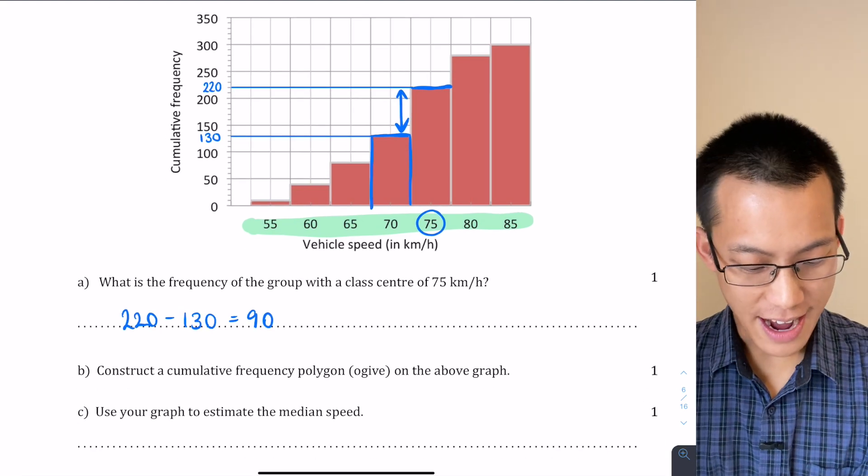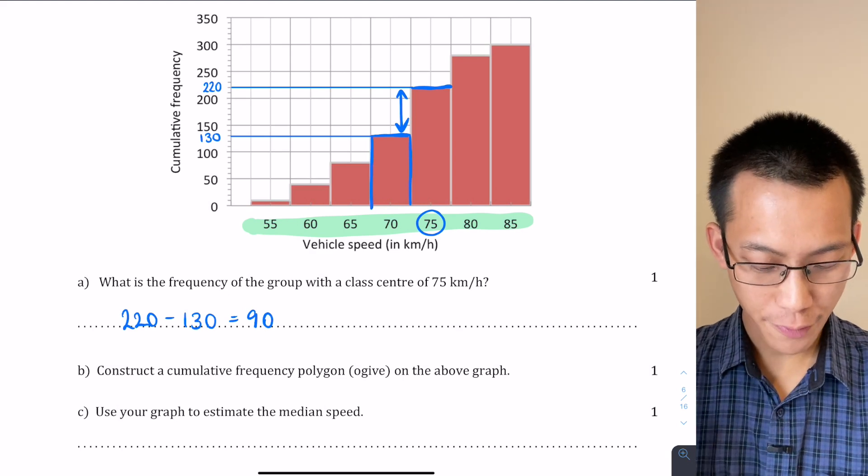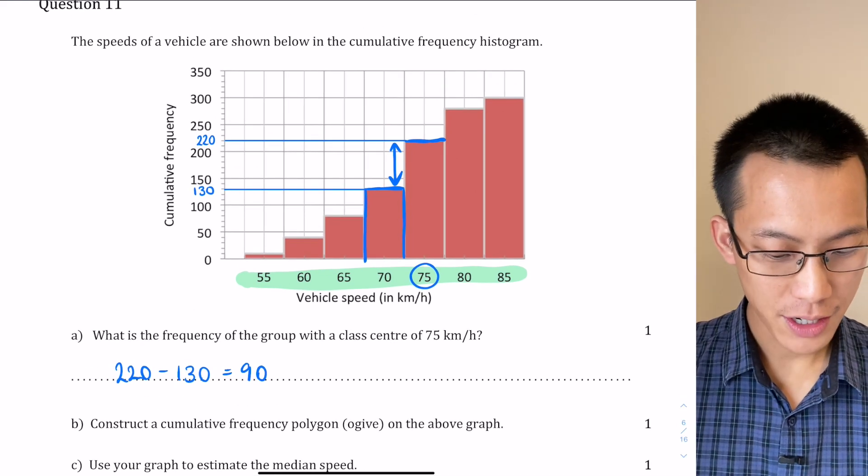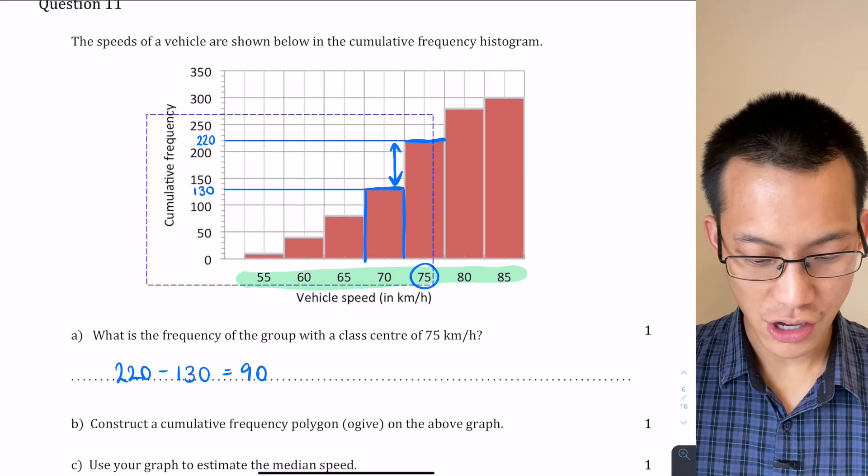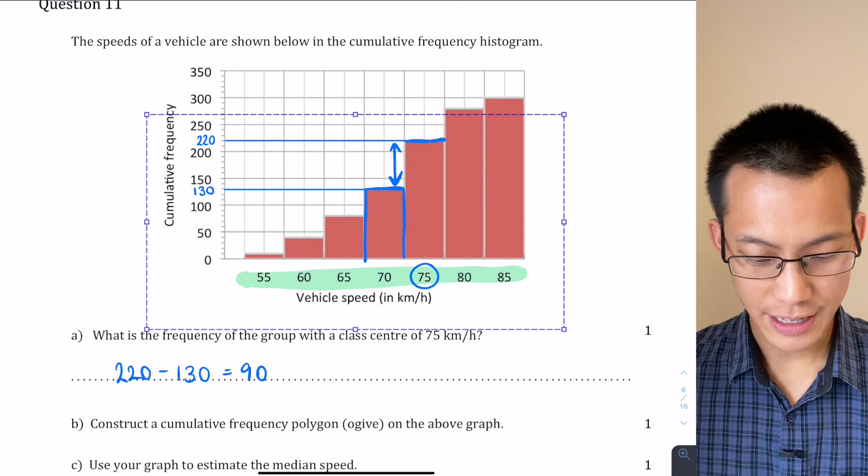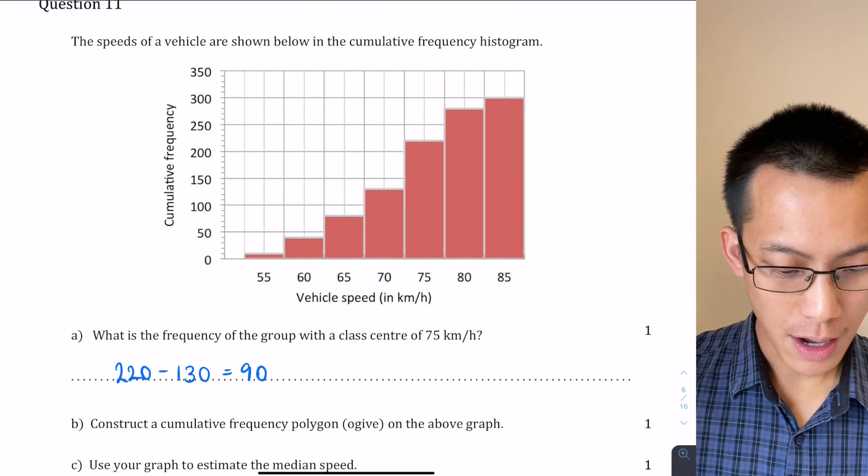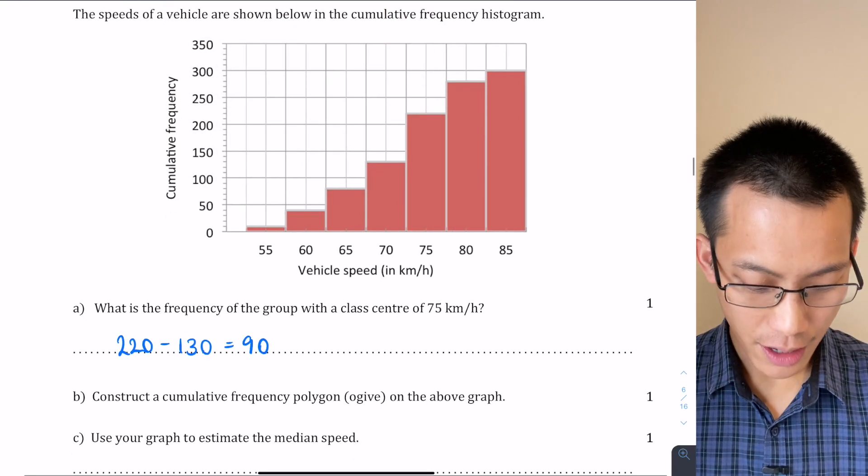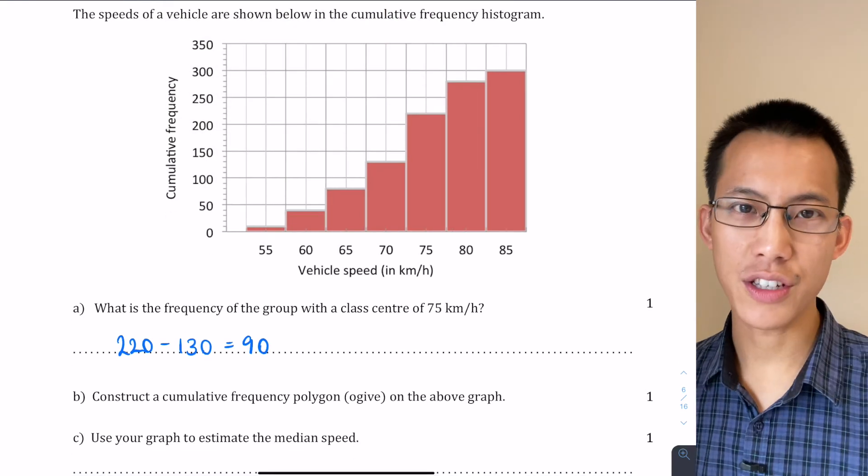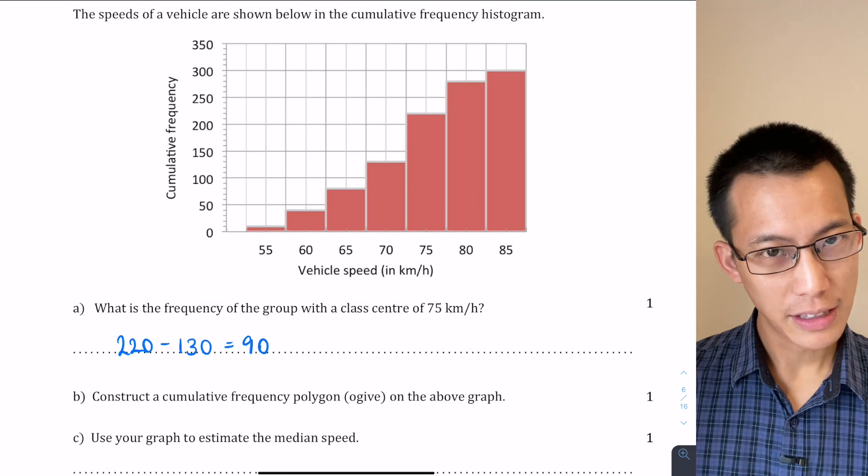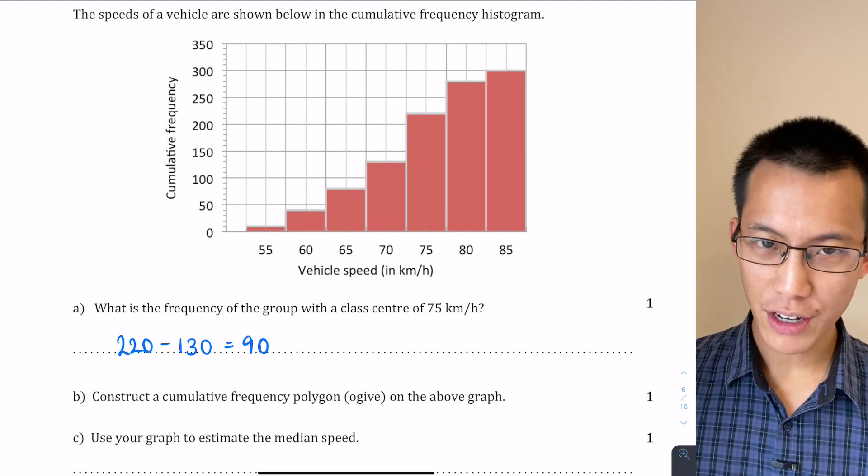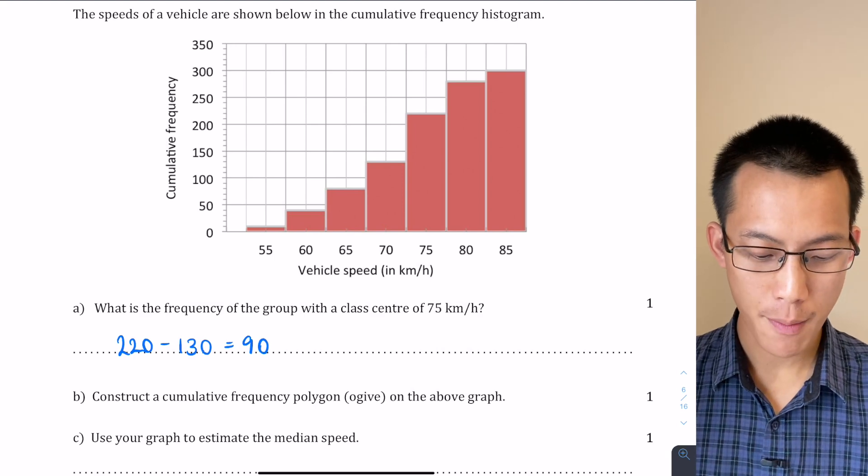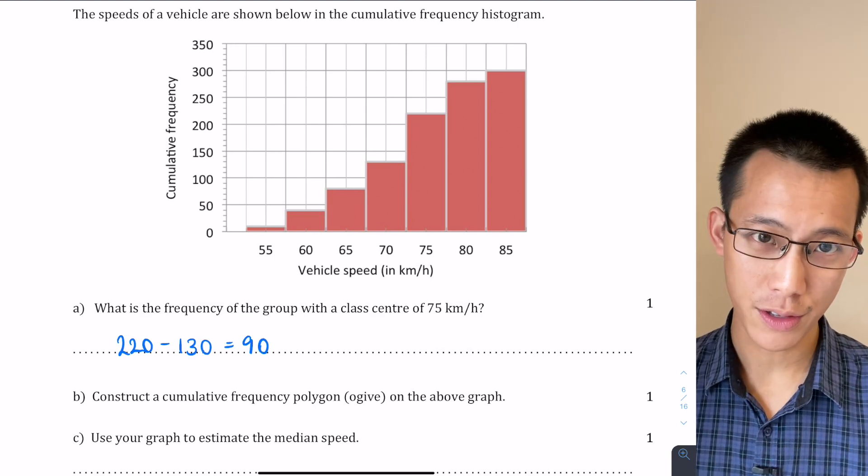Alright, now next step. Construct a cumulative frequency polygon or an ogive on the above graph. Now I'm going to get rid of all of this working here so that you can see the ogive I'm about to draw as clearly as possible. I'm going to use a nice thick black here so that you can see it. Now a cumulative frequency polygon is going to join the bottom left corner to the top right corner in a continuous line from the bottom of the chart all the way to the top.